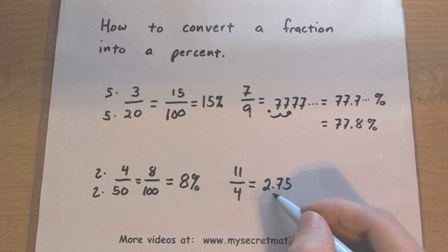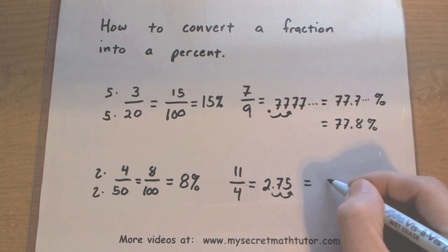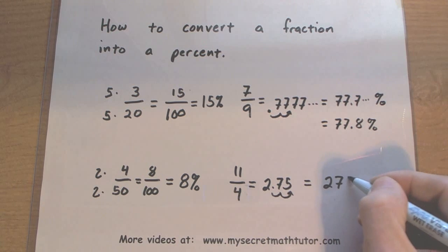When looking at that decimal, move it to the right two spots. This will give you 275%.